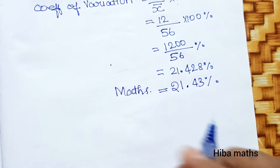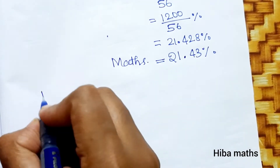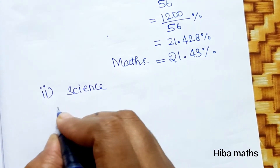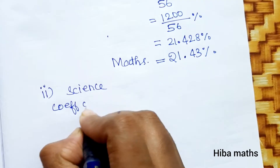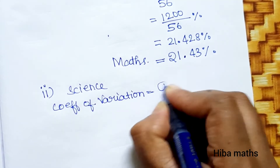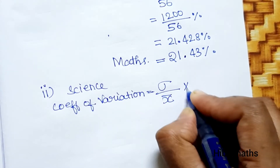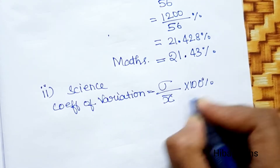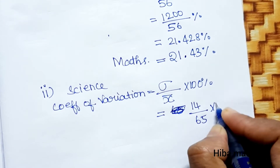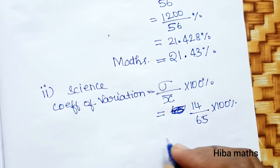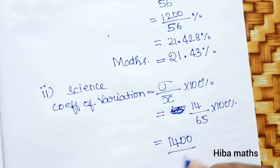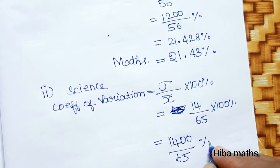Next, for Science: Coefficient of Variation equals standard deviation by mean into 100 percent. Standard deviation is 14, mean is 65. So CV equals 14 divided by 65 into 100%, which gives 1400 divided by 65 percent. The Coefficient of Variation for Science equals 21.54 percent.